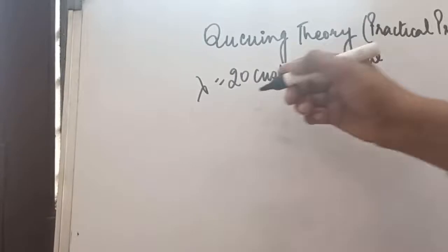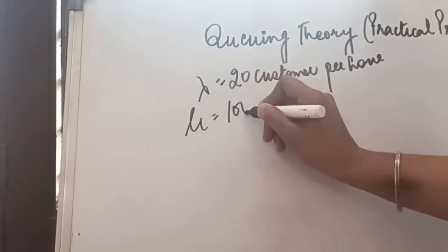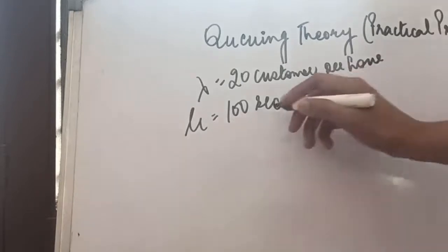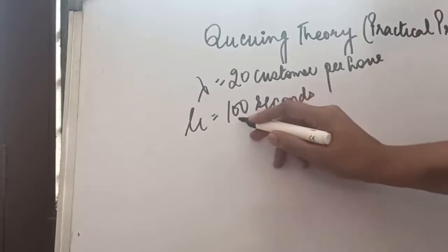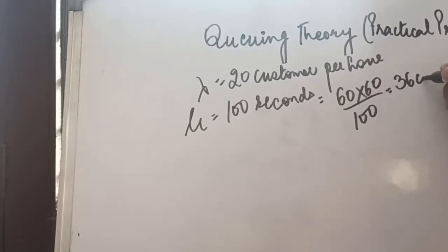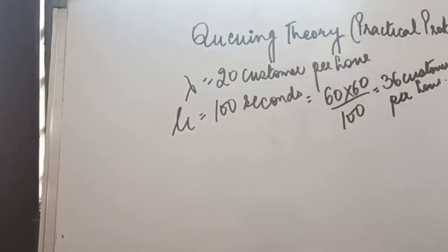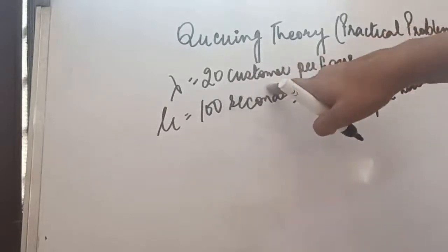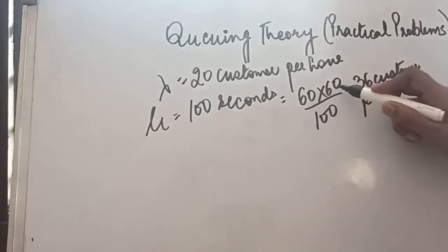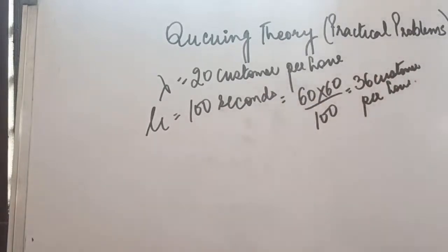The service time is given as 100 seconds per customer — meaning mu was given as 100 seconds. We need to convert this to an hourly rate. Since one customer takes 100 seconds and there are 3600 seconds in one hour, mu equals 3600 divided by 100, giving 36 customers per hour.